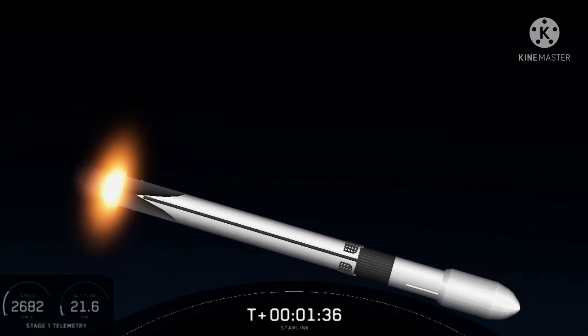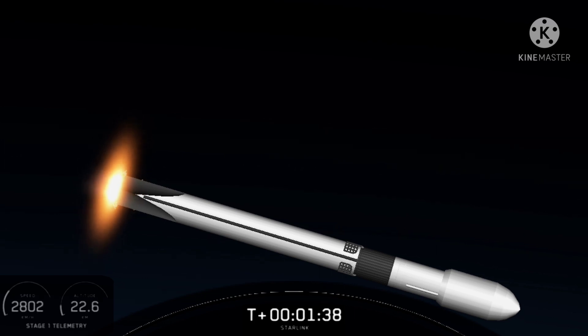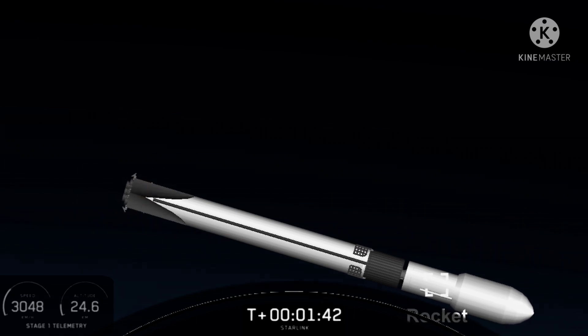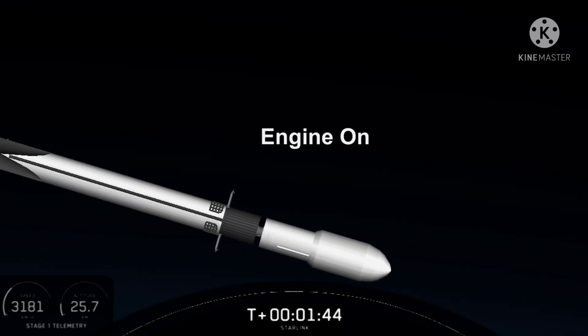First up, main engine cutoff. This is where all nine engines on the first stage will shut down in order to slow the vehicle down in preparation for stage separation.